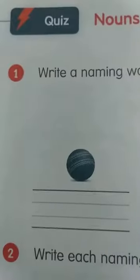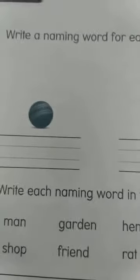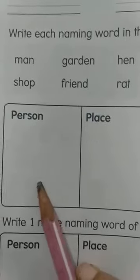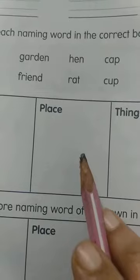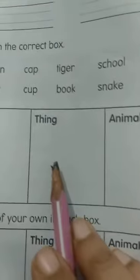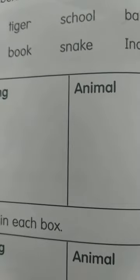Quiz section — noun. Write a naming word for each picture: ball, cat, sun. Write each naming word in the correct box. Person section: man, friend, baby. Place section: garden, school, shop, India. Thing section: cap, book, cup. Animal section: hen, tiger, rat, snake.